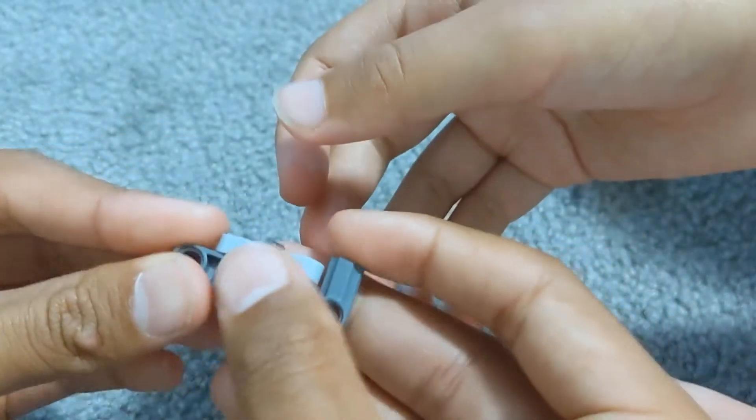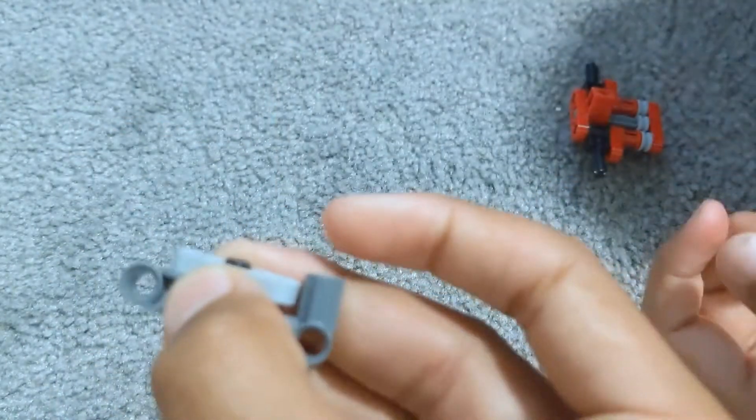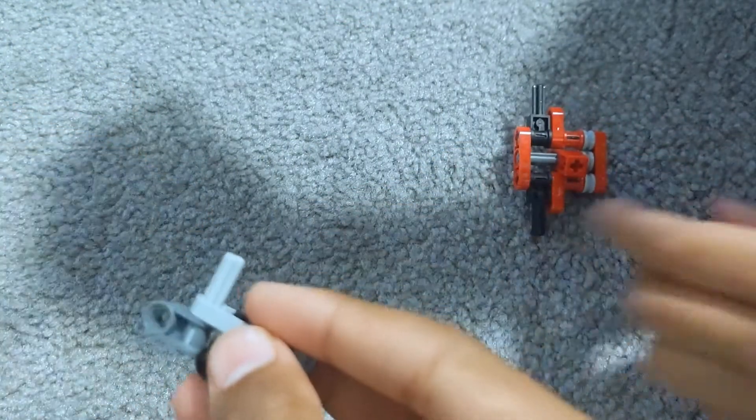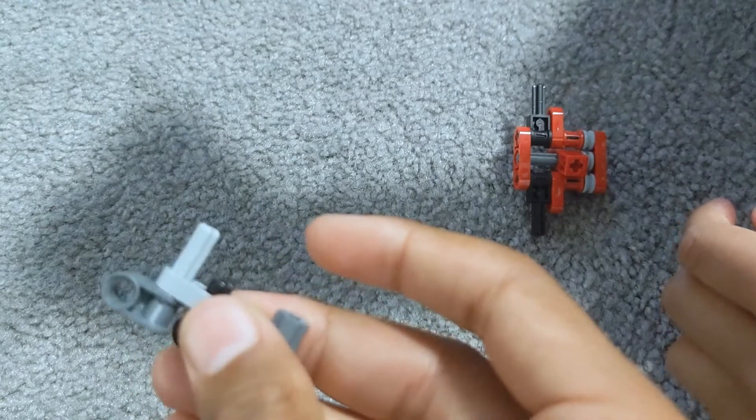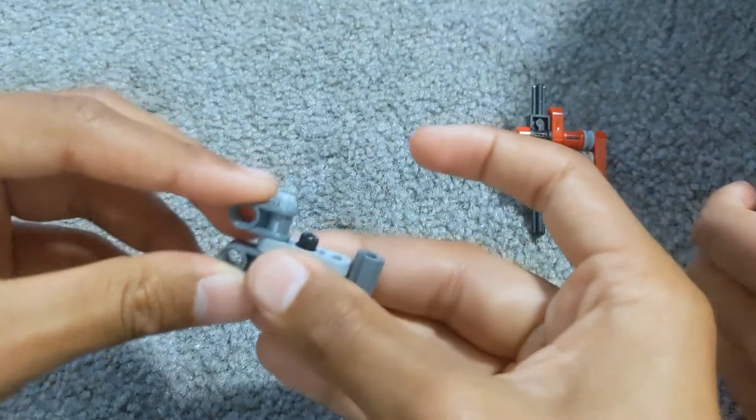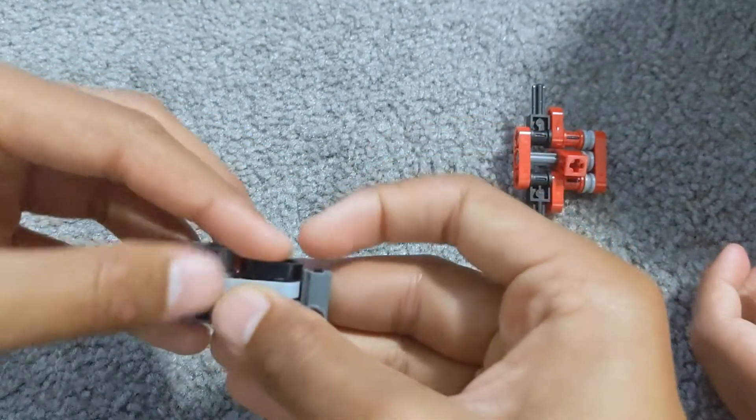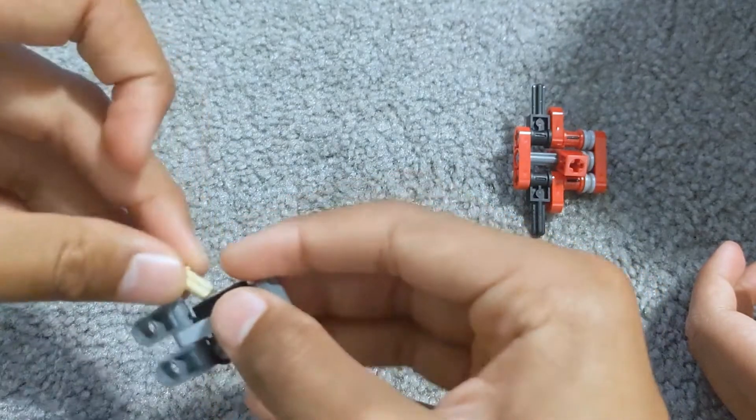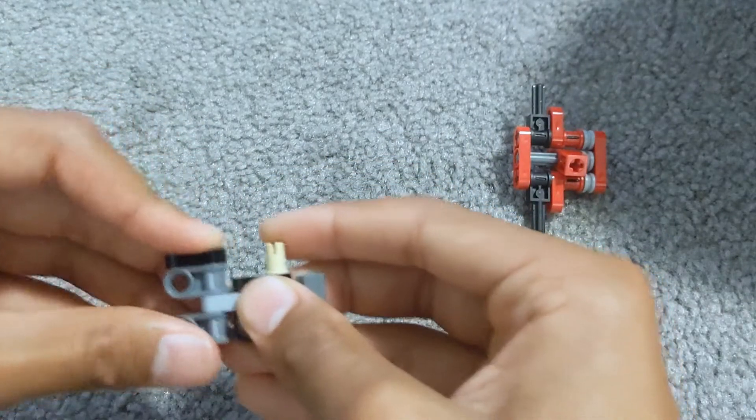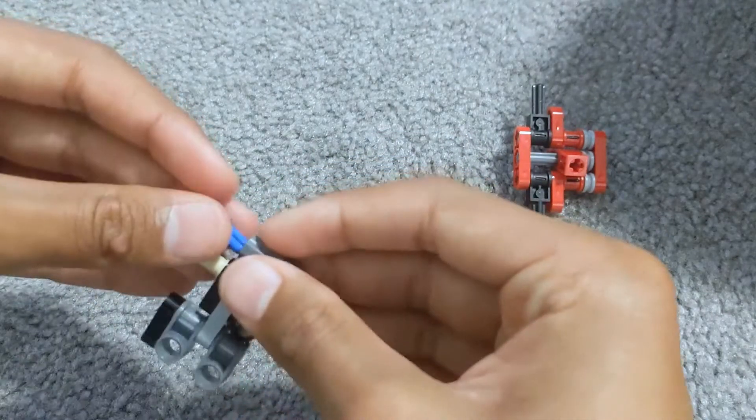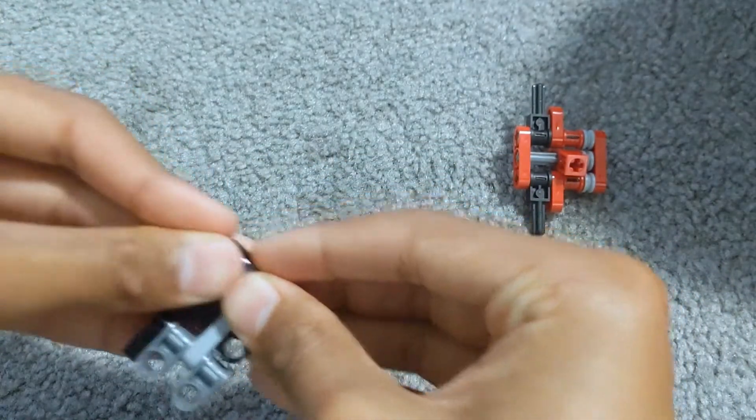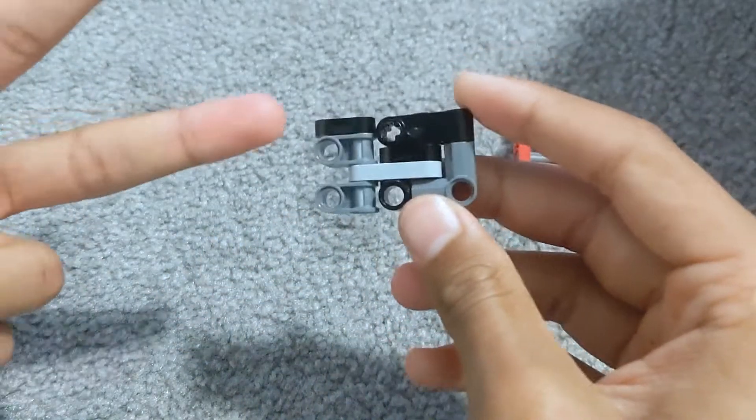Then get this, put it here, hold it together, and put it through like that. Then you get another one of these, you put it like that. Then you put that there, this here, this here, this there, and put this like this. Make two of these.